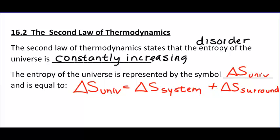Delta S of the system is really determined by what phase to what phase you're going through — like the ice cube melting. Going from solid, which is super ordered, to liquid increases entropy. Even in a reaction, if you have one mole of gas on the left and five moles of gas on the right, the delta S of the system is going up because you're generating more gas, and more gas means greater positional probability, which means greater disorder. So delta S of the system is determined by the phases and phase changes occurring during the process.